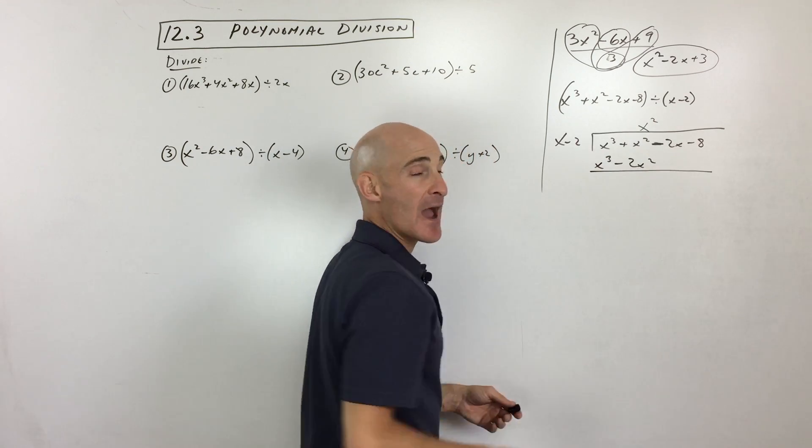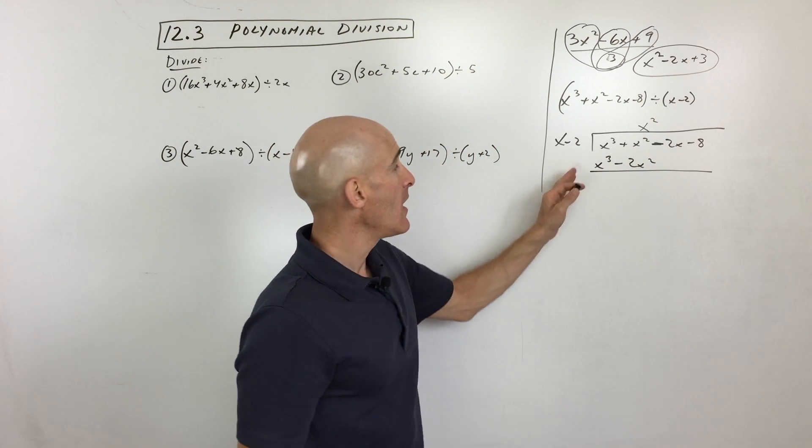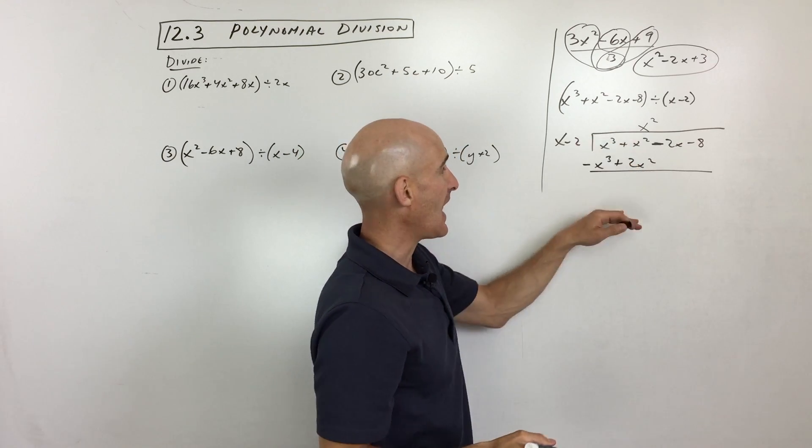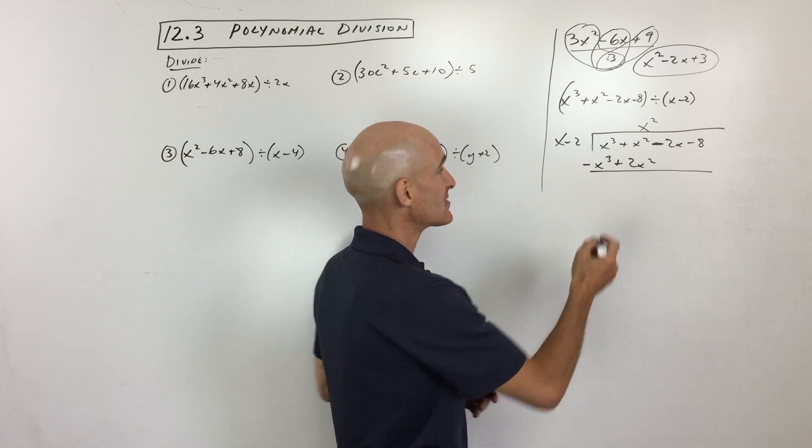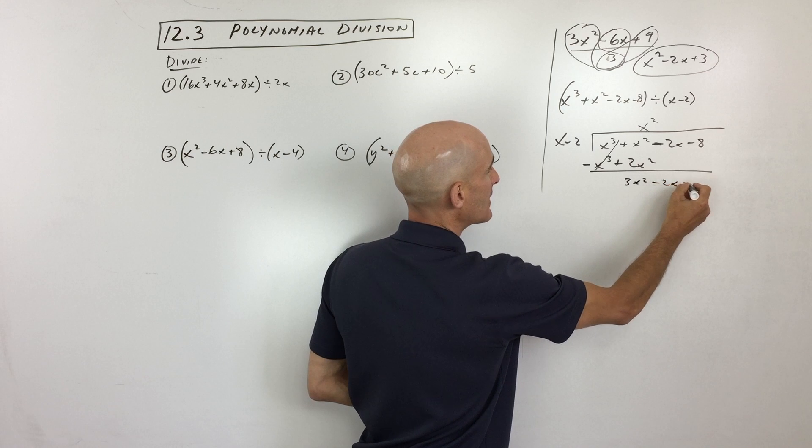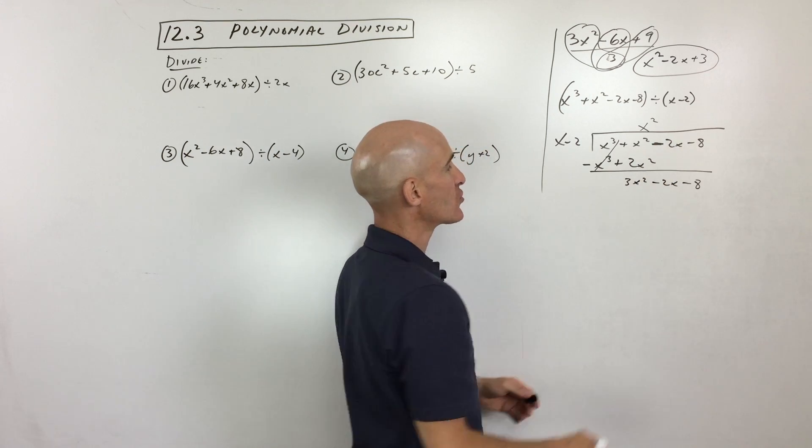Now you just subtract, just like you normally do when you do long division, but what a lot of students like to do instead of subtracting is changing the signs to the opposite and adding, because subtraction is like adding the opposite. These guys cancel. Now we get 3x squared minus 2x minus 8. I'm just bringing those terms down.